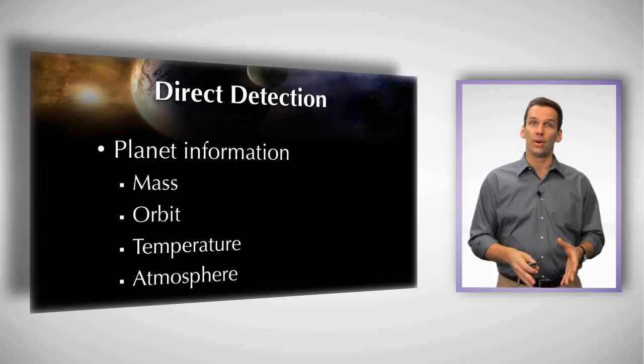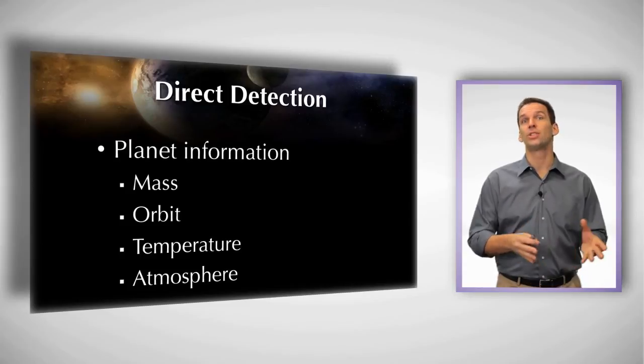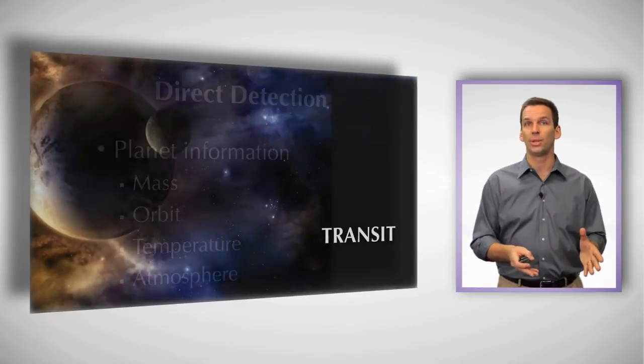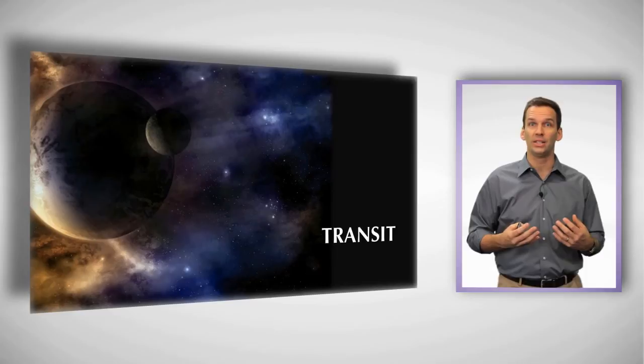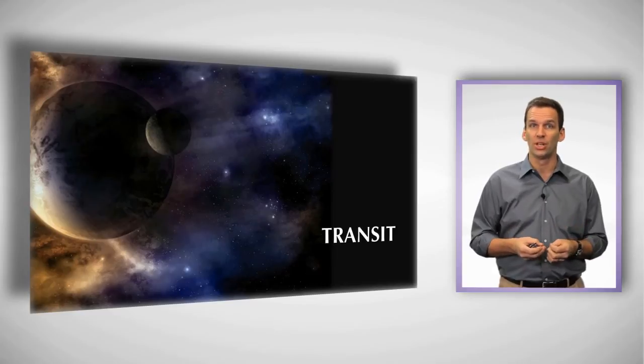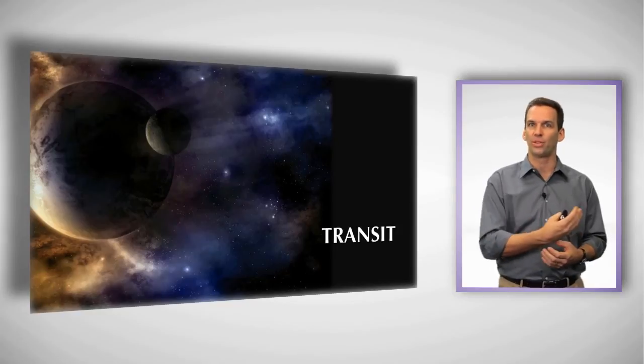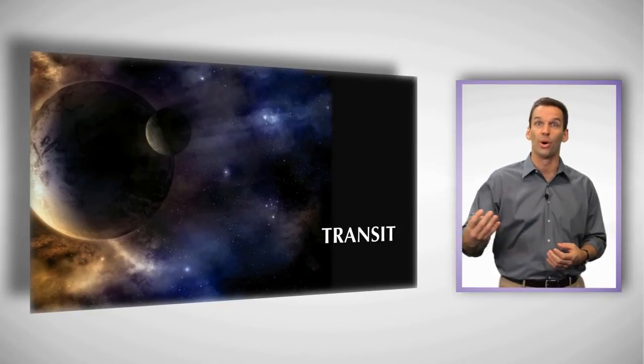As of right now, though, the most prolific technique is the transit technique. And this technique was employed by the Kepler satellite, a satellite launched, operated for three years, trying to find Earth-like planets orbiting around sun-like stars. Earth takes one year to orbit, and to do the transit technique, you have to have about three transits, and so you have to look for three orbits.